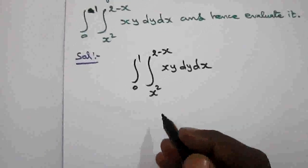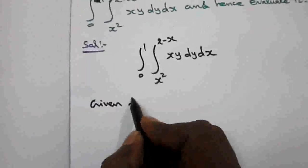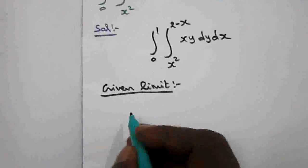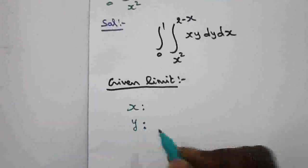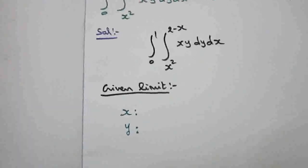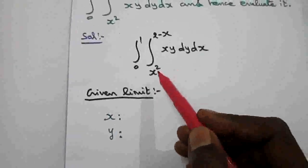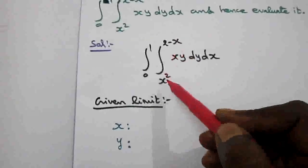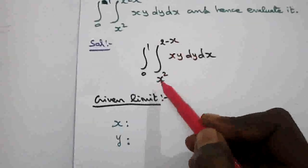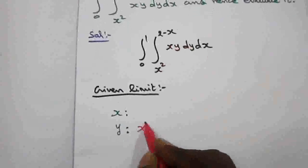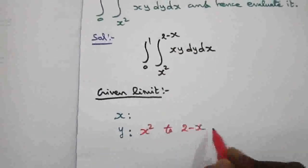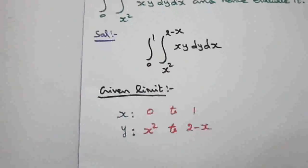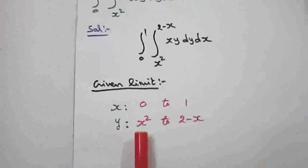First I am going to write the given limits. The inner integral has the limit variable in terms of x, so that is the limit for y. The y limit is x squared to 2 minus x. Obviously, the x limit is 0 to 1.